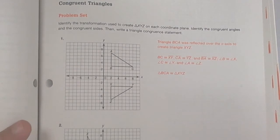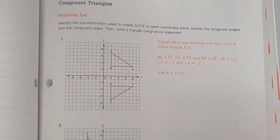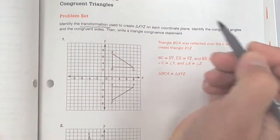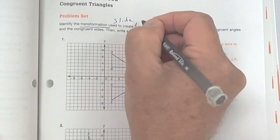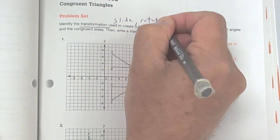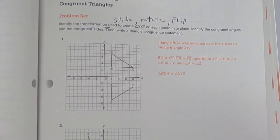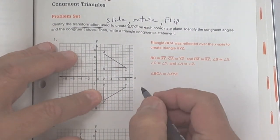Now look at 7.2 — this is the last section we'll do this week before break. Tomorrow we'll watch a movie and relax over the holidays. The question is to identify the transformation. Remember there are three: you're going to slide it, rotate it, or flip it. This one here looks like a flip, so I'd say it's a reflection.